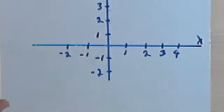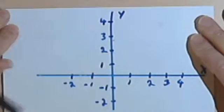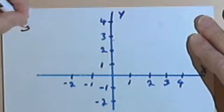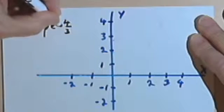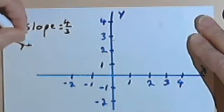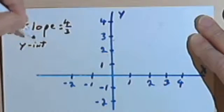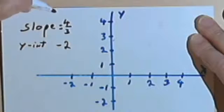Okay, here we've got a graph, and let's say that we're told that there's a line and the line has a slope of four-thirds and it has a y-intercept of negative 2.